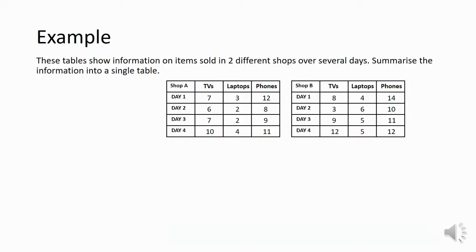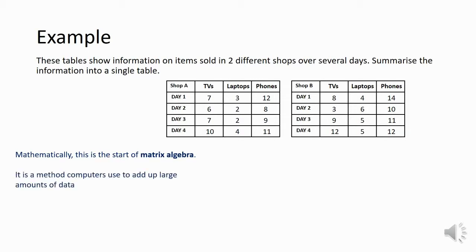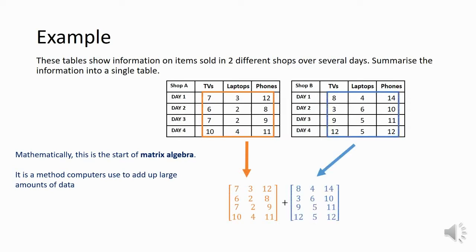Let's look at an example of the way matrices are used. We've got two tables showing two different shops that sell TVs, laptops, and phones across four days. We want to summarize the information into one table, so we're just adding what shop A has sold to what shop B has sold - that's the math behind what computers do when they add large amounts of data. We grab shop A's data and put it into a matrix, do the same for shop B, and when we add them we just add corresponding elements.